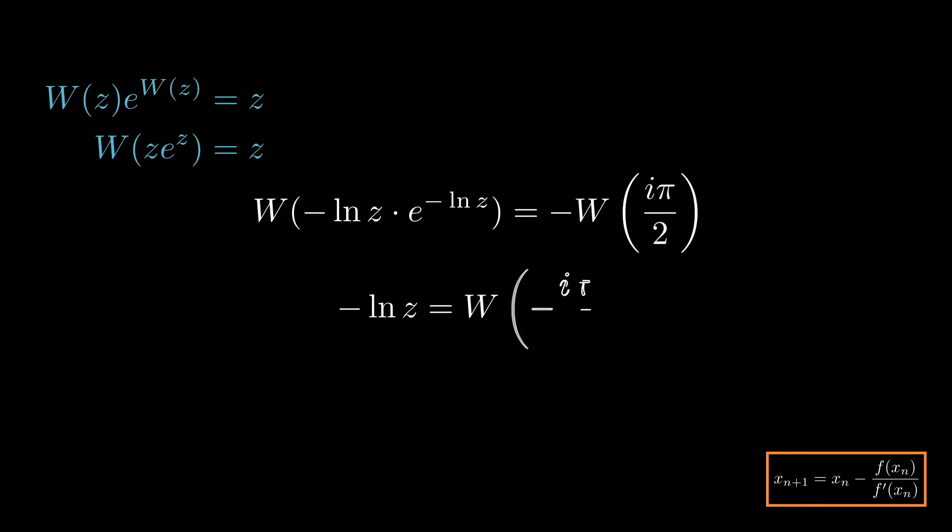And although this is kind of a wonky looking thing, we can solve this using regular algebra rules. Just multiply both sides by a negative and exponentiate. We have z equals e to the minus W of minus i pi over 2.